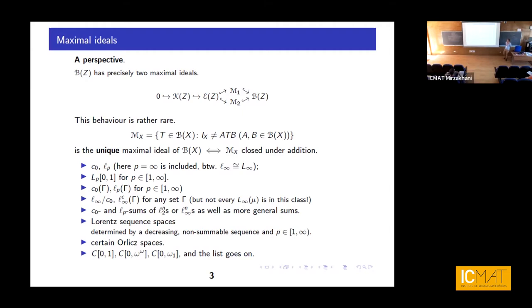This set is closed under addition for a list of classical spaces that includes LP spaces, L-infinity mod C0, spaces of countably supported functions, C0 and LP sums, various Lorentz sequence spaces, Orlicz spaces, and the list goes on. In most cases, as far as I can tell, you don't prove it from the definition — it usually comes as a byproduct of doing something else. Today I'd like to find and discuss some sufficient criteria, based on the basis of the space, for concluding that MF(X) is closed under addition.